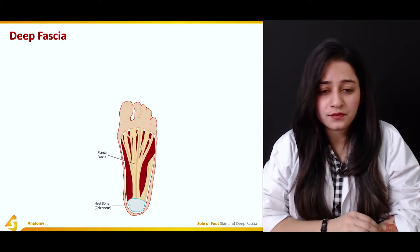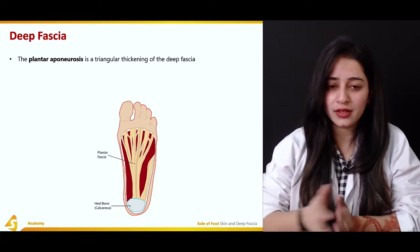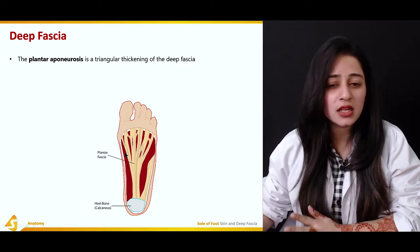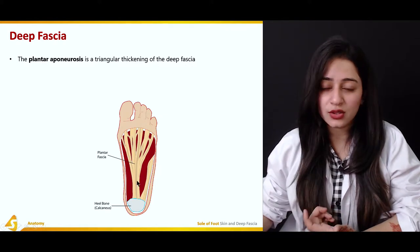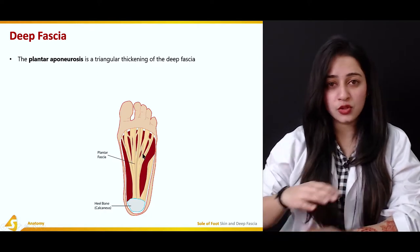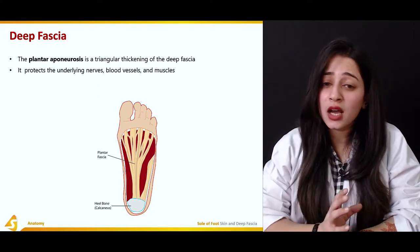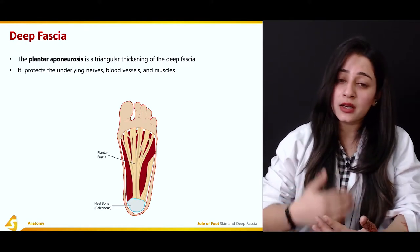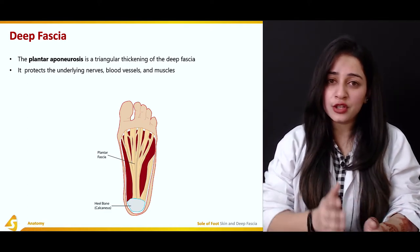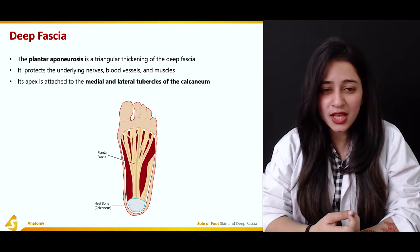The deep fascia of the sole is essentially the plantar aponeurosis — both terms are interrelated. The plantar aponeurosis is a triangular thickening of the deep fascia, forming a triangular-shaped area just underneath the skin. It protects the underlying nerves, blood vessels, and muscles. Under this deep fascia or plantar aponeurosis, we have multiple arteries and nerves supplying different regions of the sole.